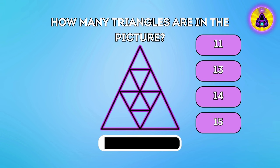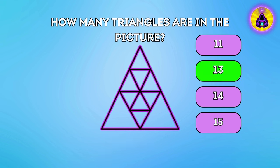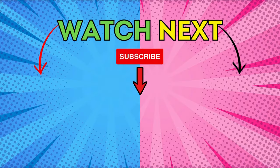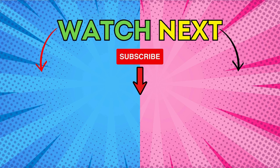Question twenty-five. How many triangles are in the picture? Correct answer is thirteen triangles. What's your score? Write it in the comments. Don't forget to like and subscribe and choose what you're going to watch next.